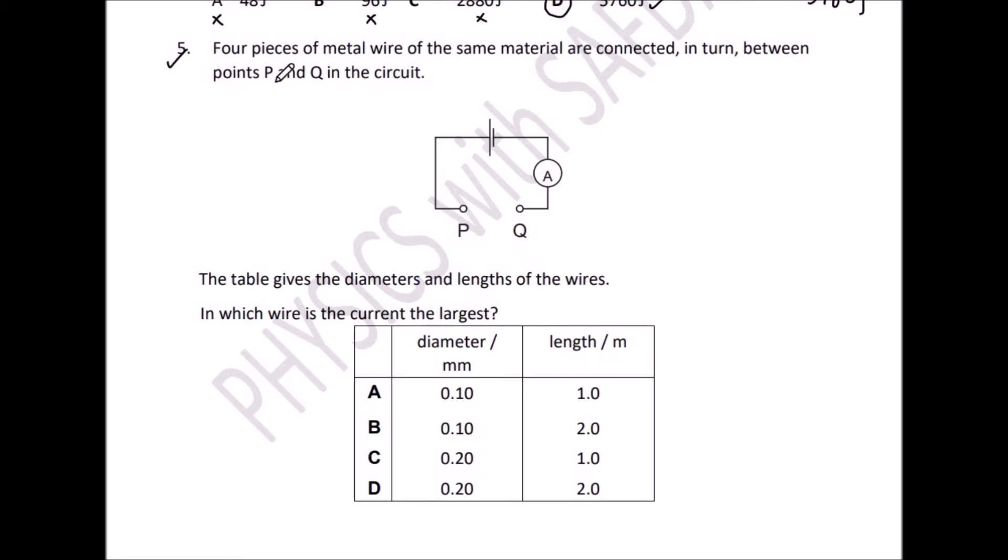Question number 5: Four pieces of metal wires of the same materials are connected in turn between points P and Q in the circuit. The table gives the diameter and length of the wires. Look at this diagram. This is cell section P and Q, and for the measure of the current we have an ammeter. The question is in which wire is the current largest, and you have four options. In this column, diameter of wires are given, and second, length you have. What is the relation of resistance with diameter or length?